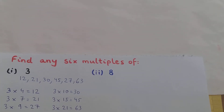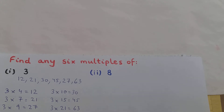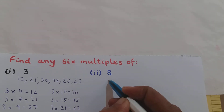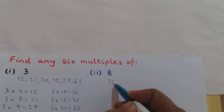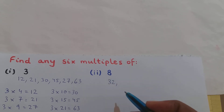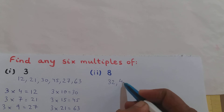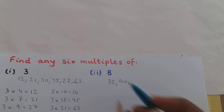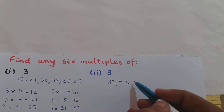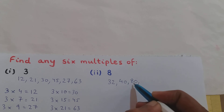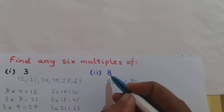Now let us find any six multiples of 8. 8 into 4 is 32, so 32 is a multiple of 8. 8 into 5 is 40, so 40 is a multiple of 8. 8 into 10 is 80, so 80 is a multiple of 8.